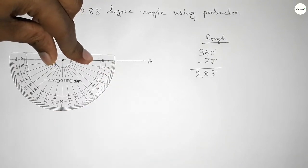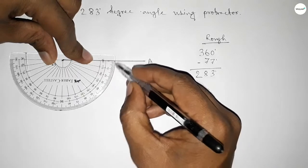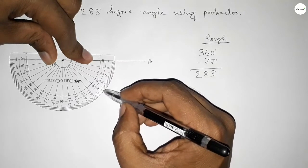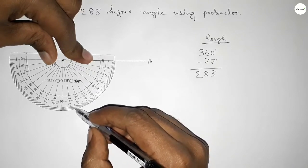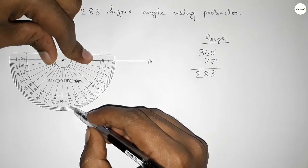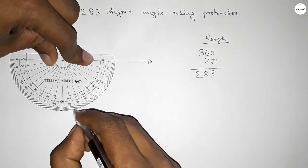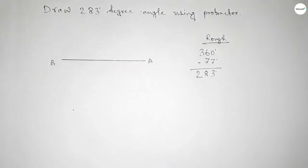Now counting 77 degrees: 10, 20, 30, 40, 50, 60, 70, 75, 76, 77. So this is 77. If we subtract 77 degrees from 360 degrees, then we can get 283 degrees.